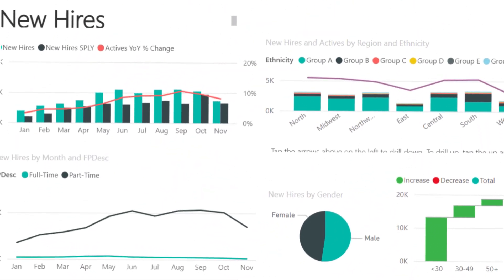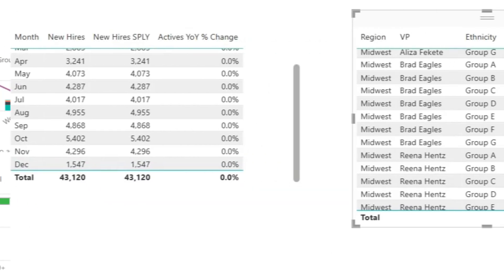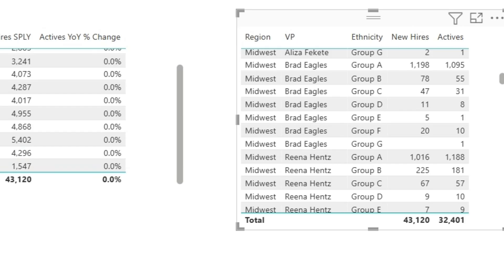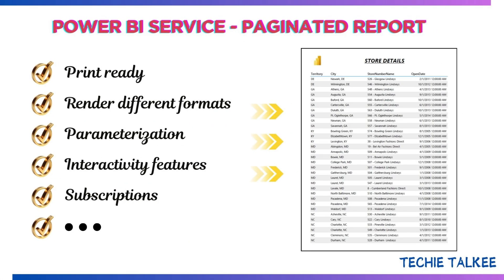You would have created a lot of reports containing visuals and tables to be shared with end users. For reports containing huge data in a tabular format, a regular Power BI report will show a scroll bar where you have to scroll the table up and down or left and right to view the complete data. What if you want to print a report or share it via email in PDF or some other format? In that case, we are going to go for paginated reports. These kinds of reports will provide the data in a printable format — the data will fit in a single page or span across multiple pages based on the volume of data.